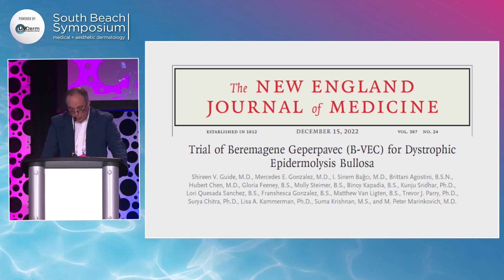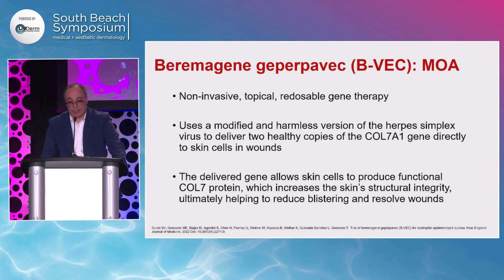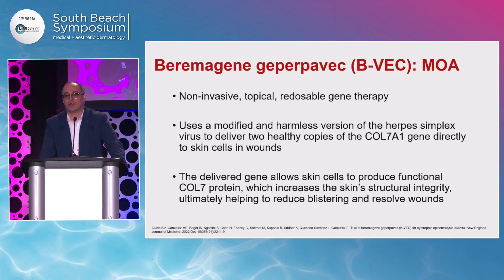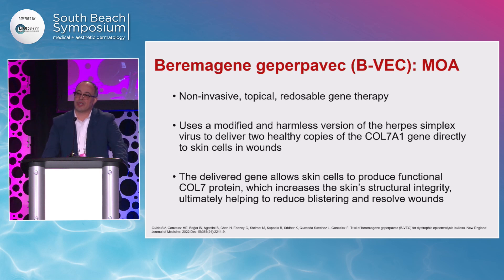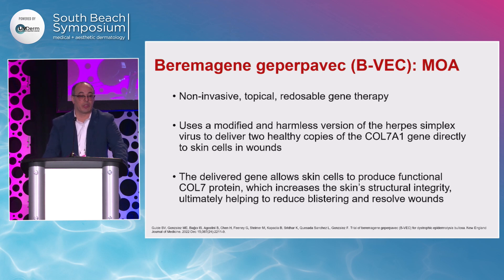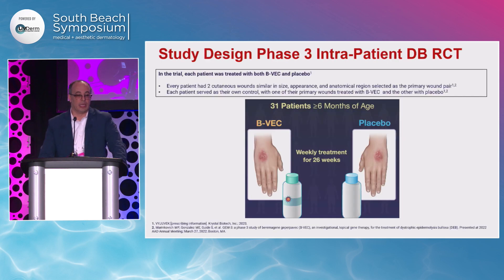The second FDA-approved drug is B-VEC — a topical gene therapy. The study was published in the New England Journal of Medicine last year. B-VEC is a non-invasive, topical, redosable gene therapy that uses a modified harmless version of herpes simplex virus as a vector to deliver two healthy copies of the COL7A1 gene directly into the skin cells in the wounds. This harmless vector does not alter the DNA and does not replicate in the skin cells. The goal is for the delivered gene to allow skin cells to produce functional copies of the collagen 7 protein, which is the defect in dystrophic EB.